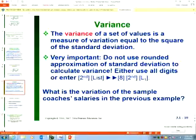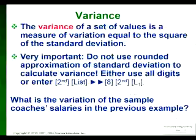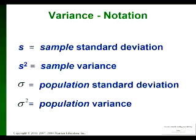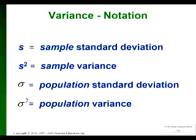Make sure you understand all of this notation. Little s is the sample standard deviation, and the symbol for sample variance is s squared — whatever s is, square it and that gives you the sample variance. If sigma is the symbol for the population standard deviation, then sigma squared is the symbol for population variance. It is not sufficient to say 'standard deviation' — you have to say sample standard deviation or population standard deviation, because they're very likely to be two different things.